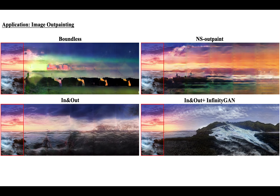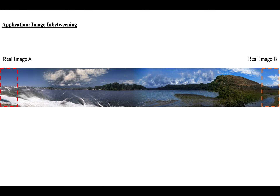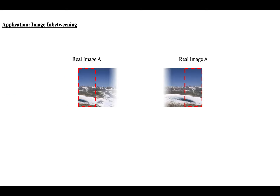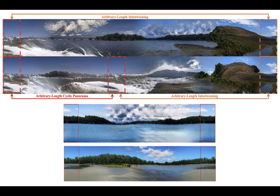Our method naturally avoids the artifacts introduced by the sequential outpainting procedure compared to previous work. Furthermore, we can achieve image in-betweening by combining latent inversion and spatial fusion generation. Our model can perform in-betweening at arbitrary distance, and by setting the same image on both sides, the model can synthesize horizontally cyclic panoramas. Here are a few more samples on panorama generation.